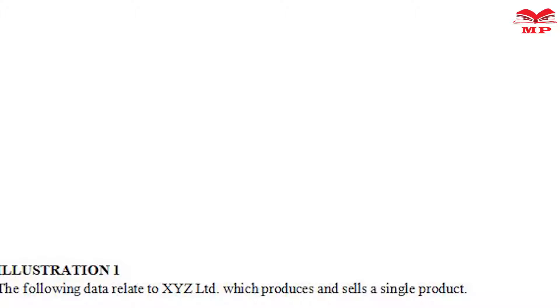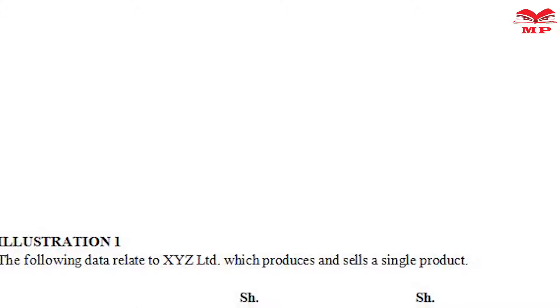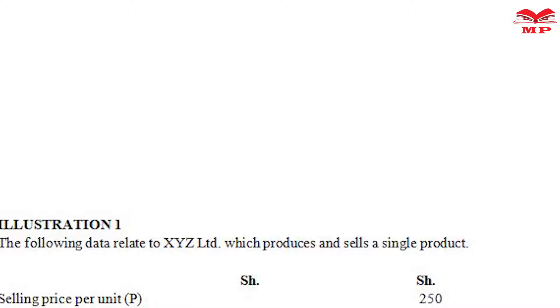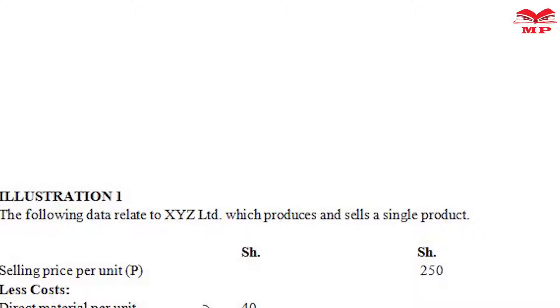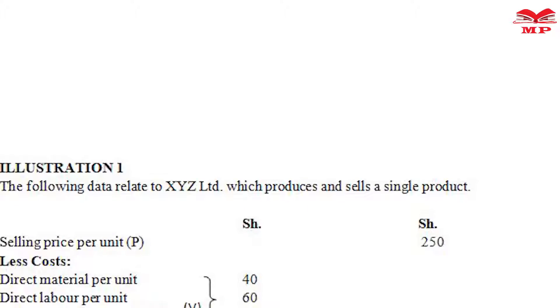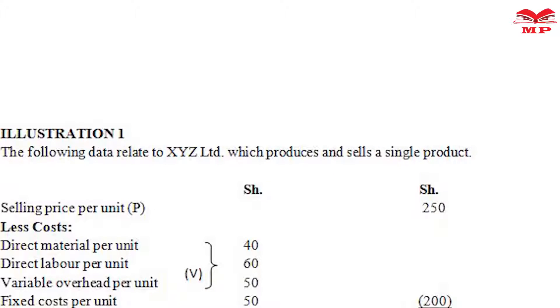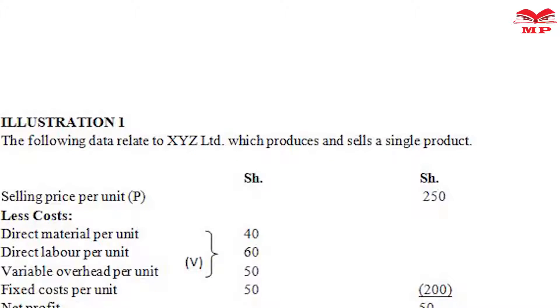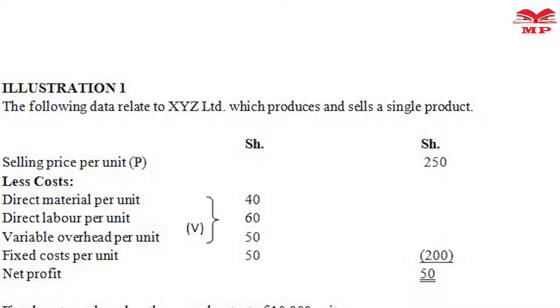The first question reads that the following data relates to XYZ Limited, which produces and sells a single product. Selling price per unit: 250 shillings. Less costs: direct material per unit 40 shillings, direct labor per unit 60 shillings, variable overheads per unit 50 shillings, fixed cost per unit 50 shillings — total cost per unit 200 shillings, net profit 50 shillings. Fixed costs are based on normal output of 10,000 units.